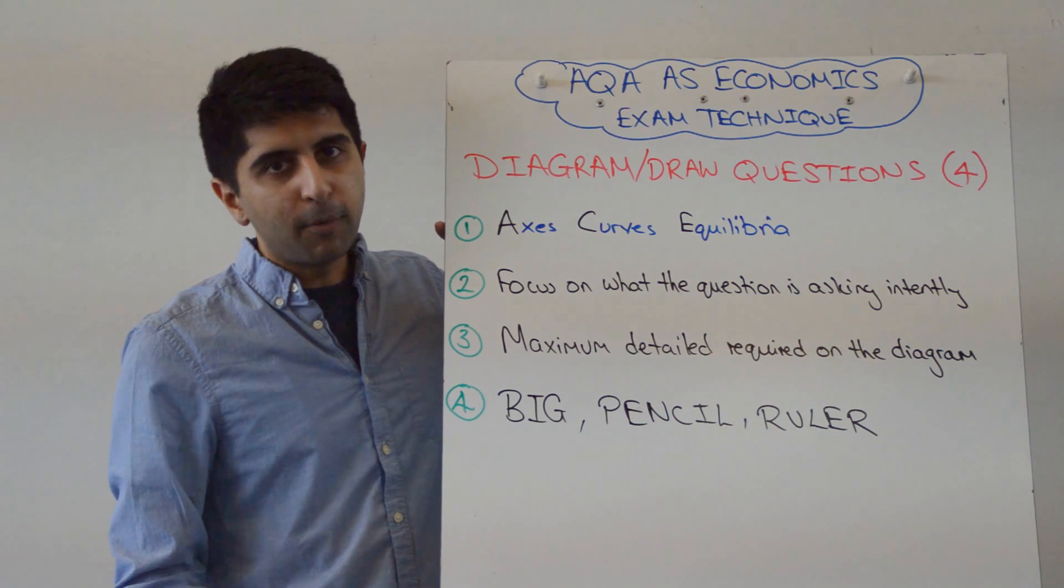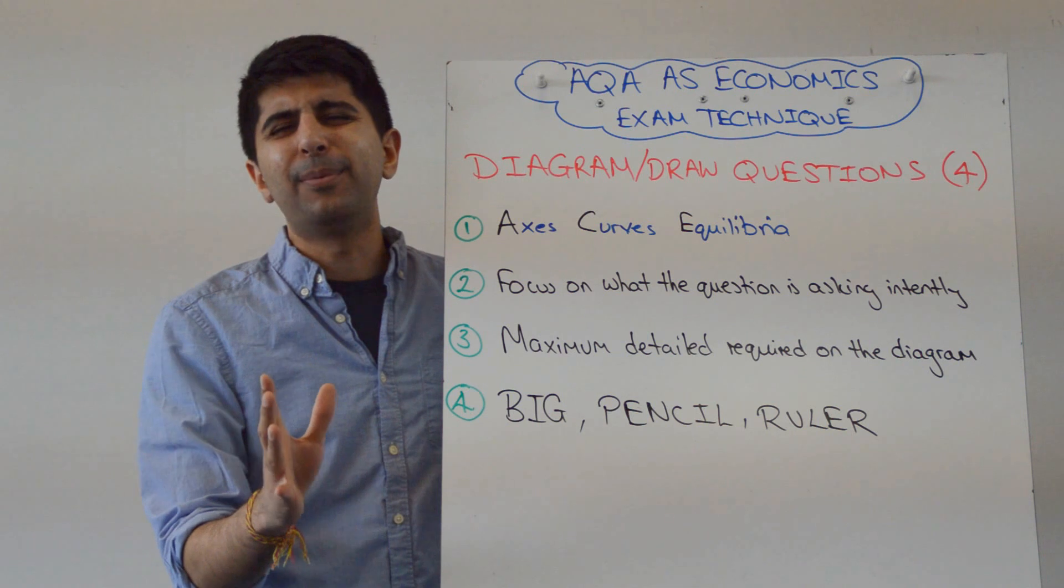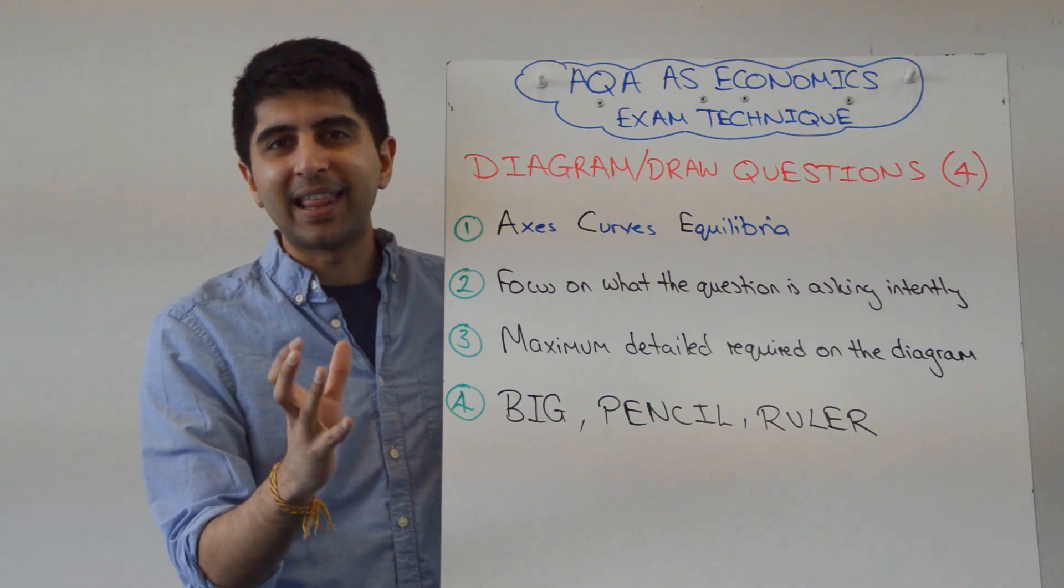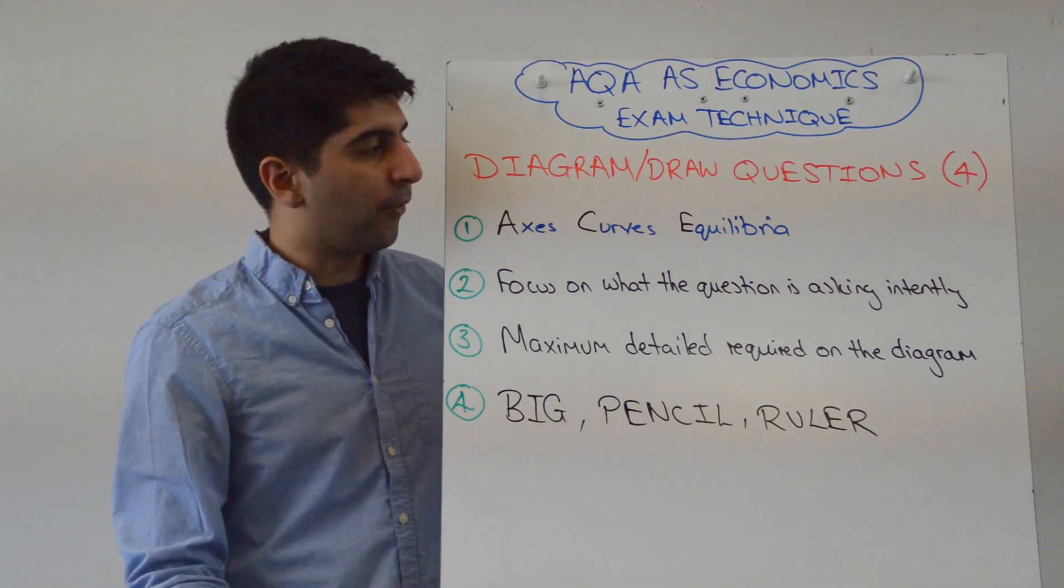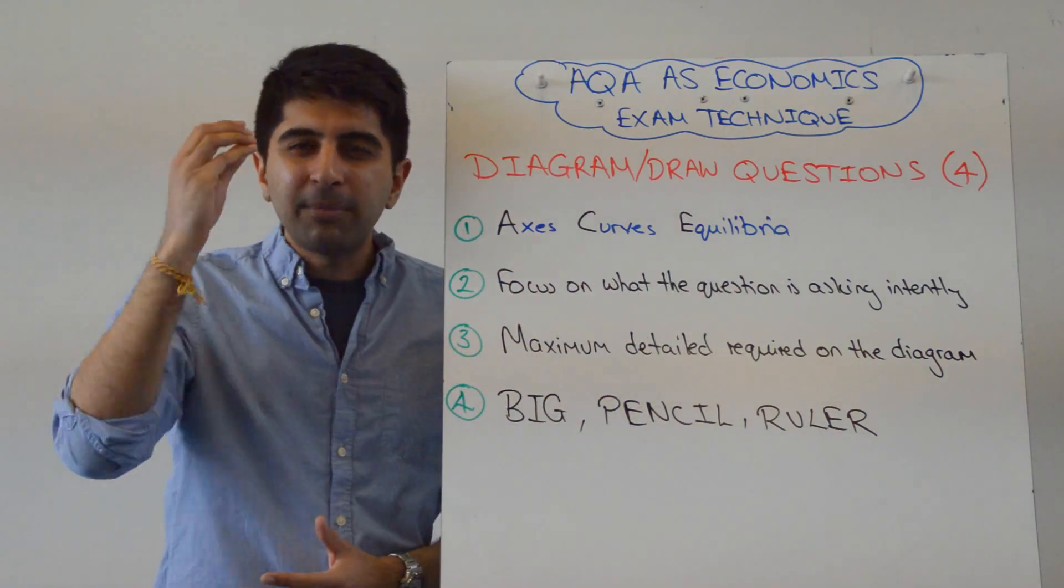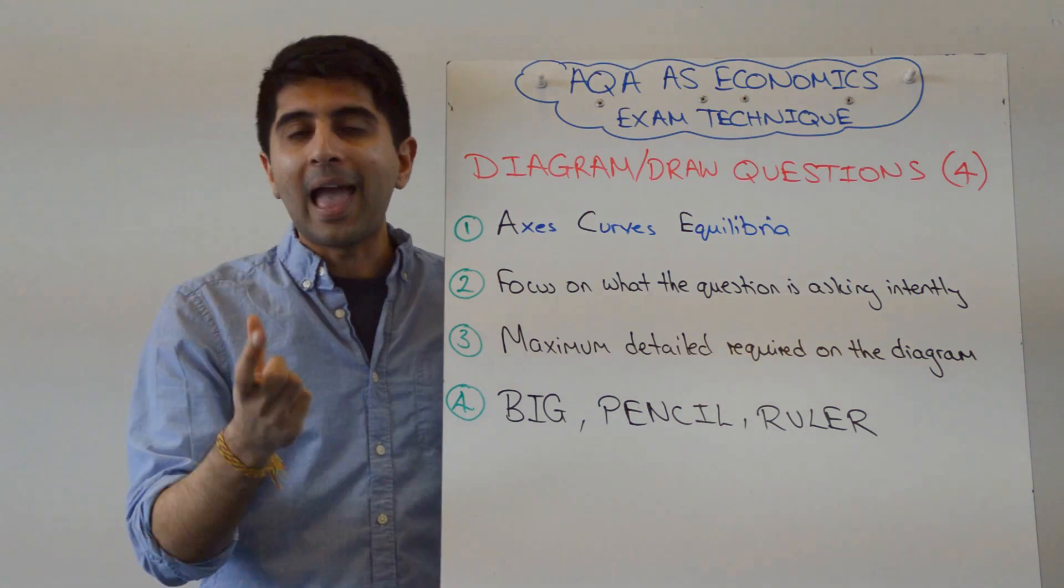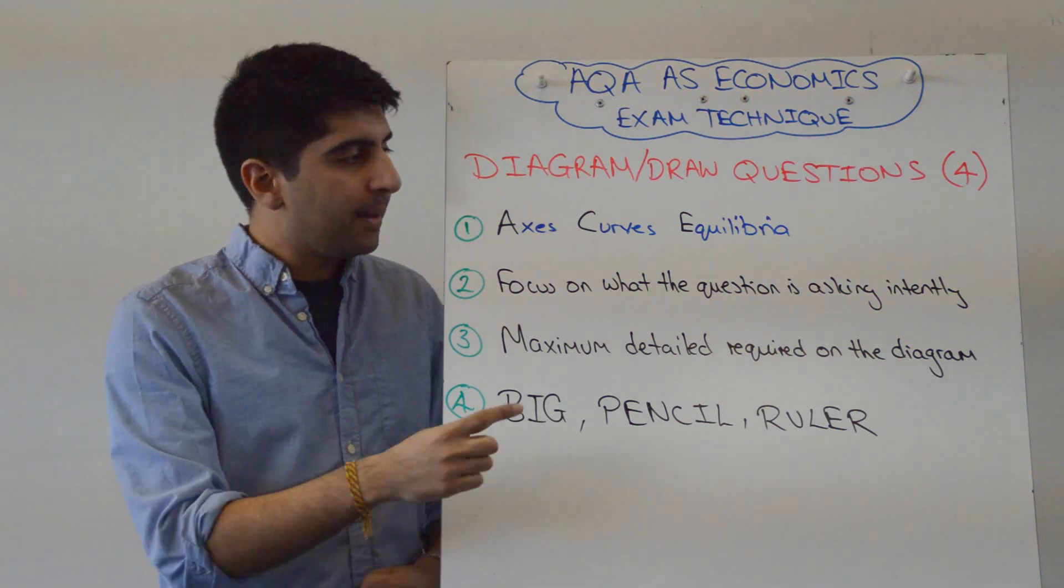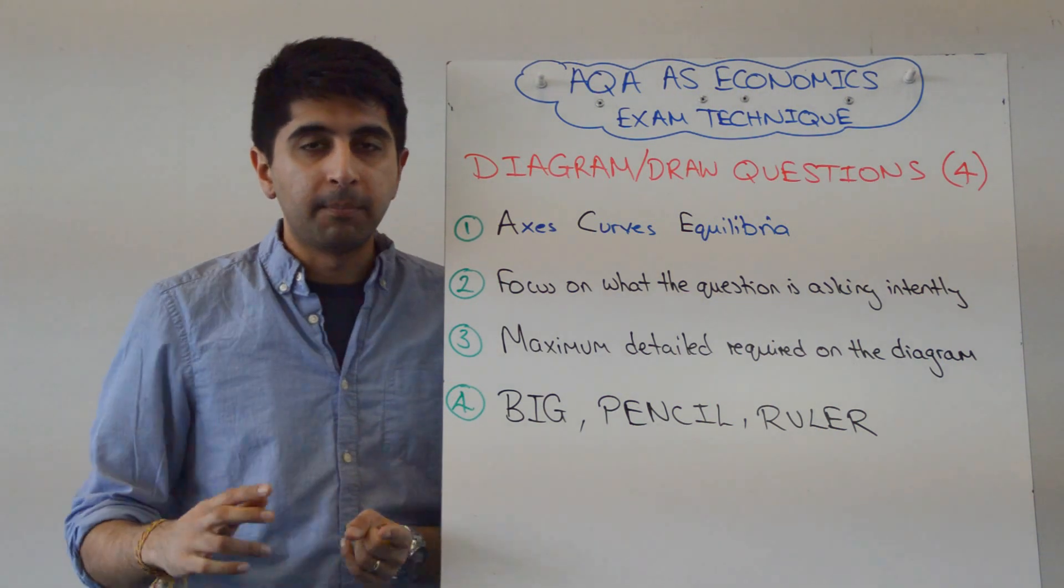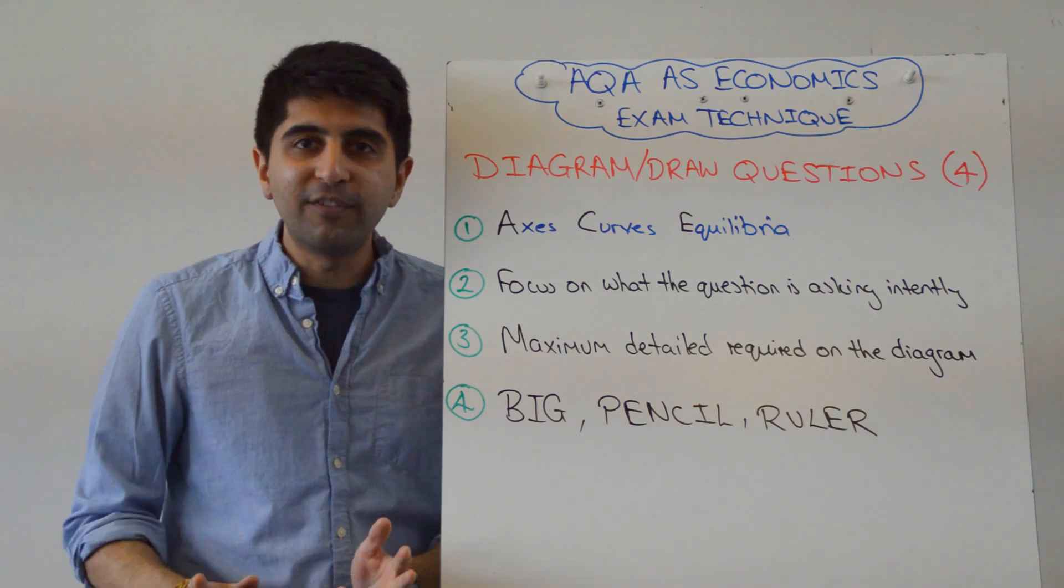You must start number one by labeling everything. So important in economics to label. I can't understate that. It's so important. A little guideline for you - whenever you're drawing an economics diagram, think: have I aced it? Have I labeled my axes? All of them. Have I labeled my curves? All of them. Have I labeled my equilibria? All of them. Have I labeled everything?